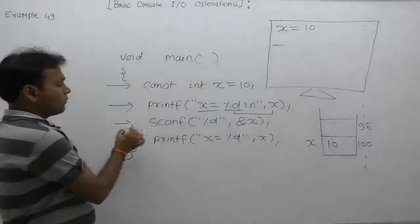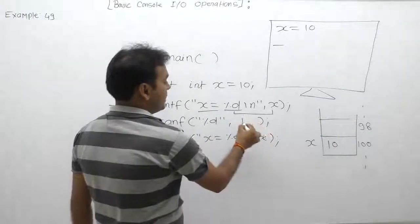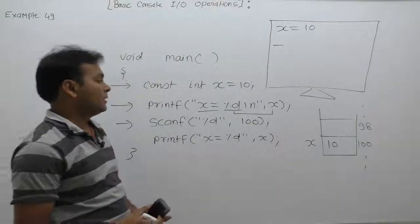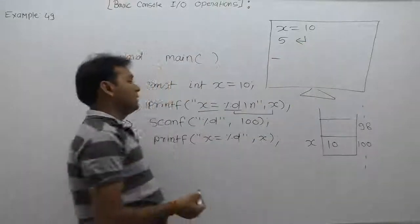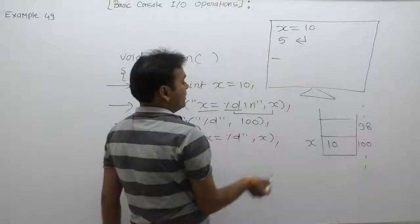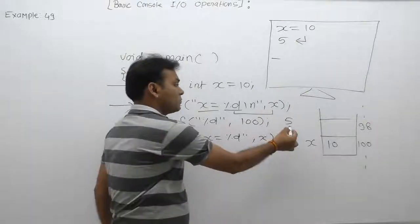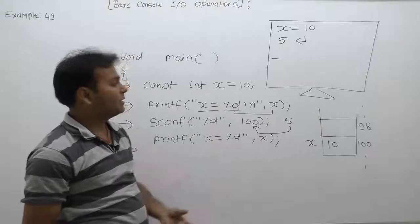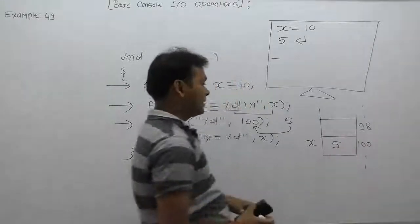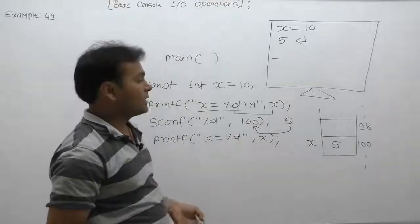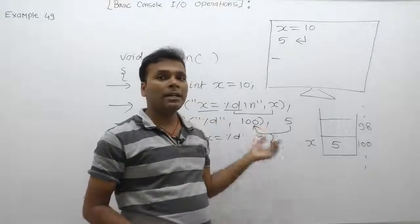Next, we call the scanf function. Instead of the variable name, we supply the address of x, which is 100. Suppose we enter the value 5 and press Enter. The scanf function reads the integer 5 from the buffer and stores it at the given address — address 100. Therefore the previous value 10 is replaced by the new value 5. We are changing the value of x, which is a constant variable, but indirectly through its memory address, not through the variable name.